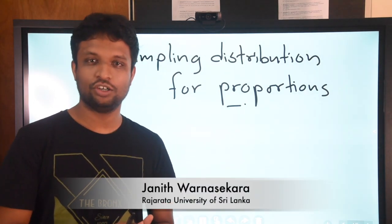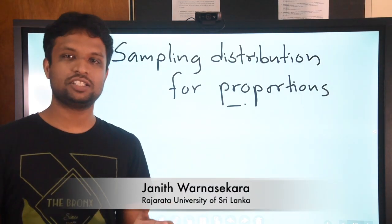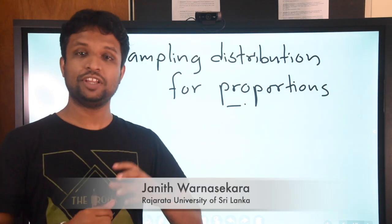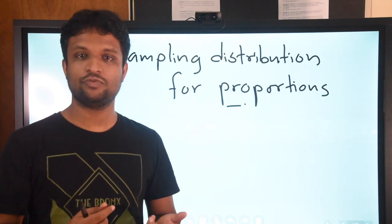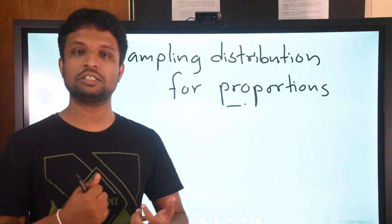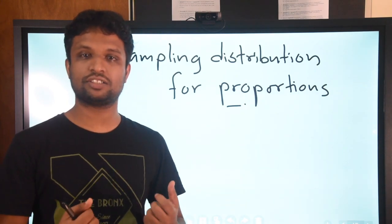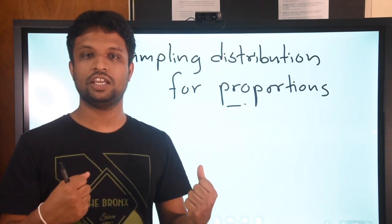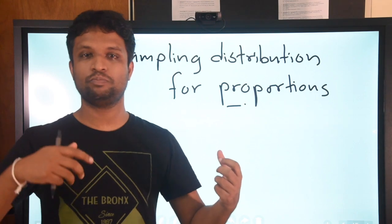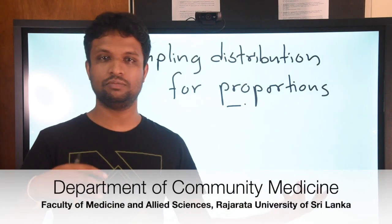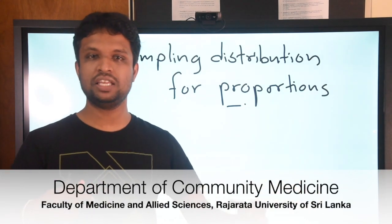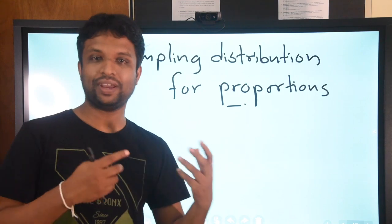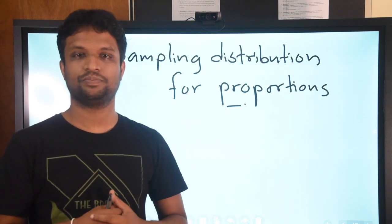Welcome to the lecture on sampling distribution for proportions. In the previous lectures we have been discussing techniques to compare means, where we compare two population means, a mean against a fixed value, or paired means.